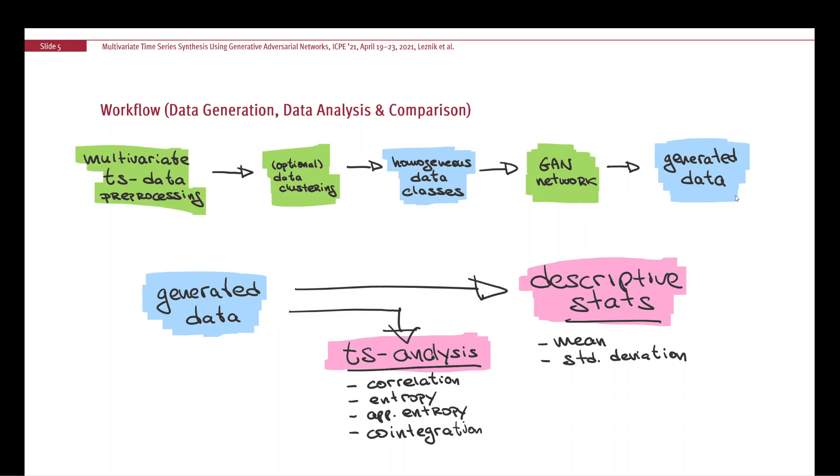The generated data then needs to be validated. We use two types of approaches. First, we look at simple descriptive statistics like the mean and standard deviation of the data. Further, we use time series analysis to look at the time series we generate. We look at correlations between the different dimensions, the multivariate dimensions of our data. We look at data entropy and approximate entropy, which tells us not only about the noisiness or information content of the data, but also about the predictability. We also look at the cointegration value, which when calculated between two time series looks at long-term dependency and tries to predict if the data is moving in the same direction.